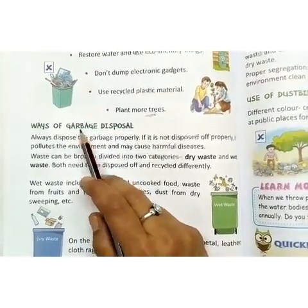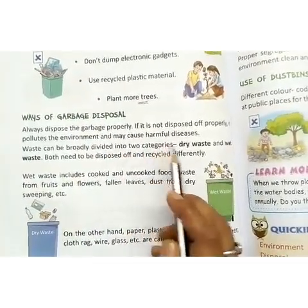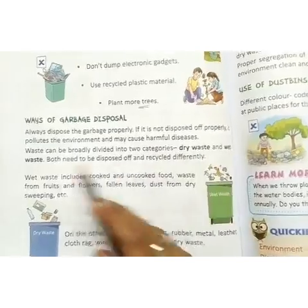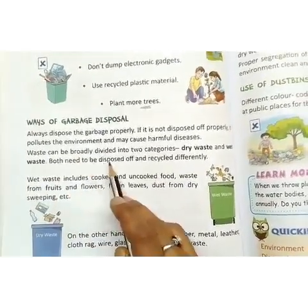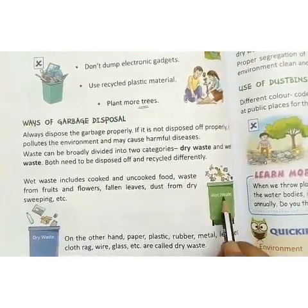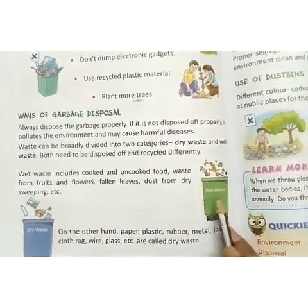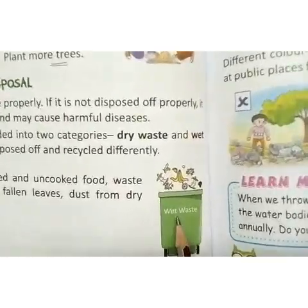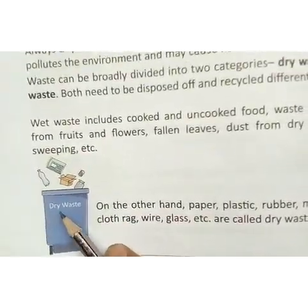We have to divide garbage into two categories: dry waste and wet waste, and dispose them in different dust bins. The green one is for wet waste, and the blue one is for dry waste.